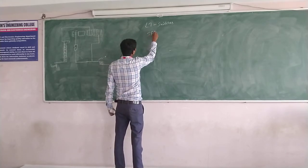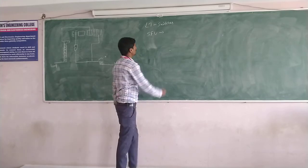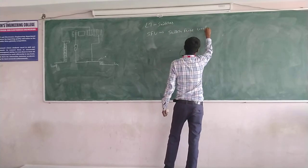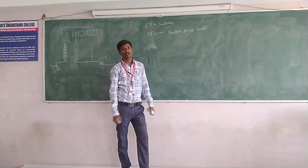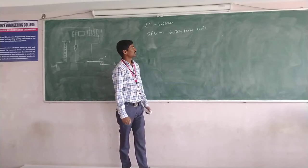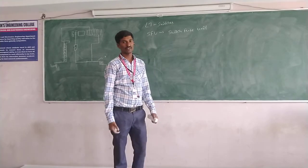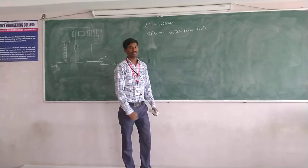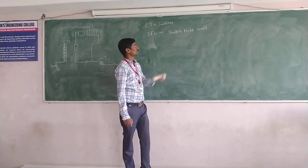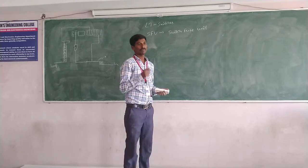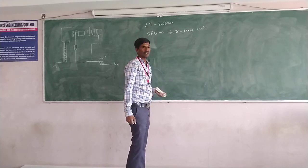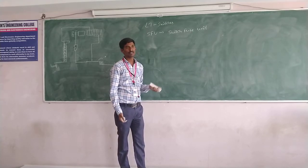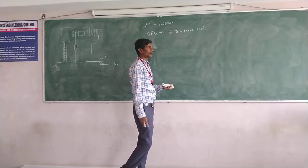The first one is SFU — Switch Fuse Unit. This is nothing but a normal fuse. Whenever load current flows or any fault occurs, this will protect the circuit by breaking it. For the SFU fuse, we place a fuse wire. Whenever a fault occurs, the fuse will be blown, and the circuit will break, protecting the entire circuit.